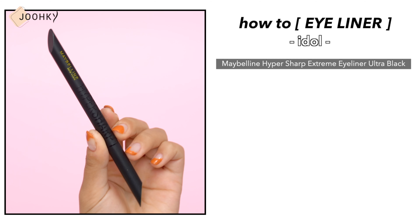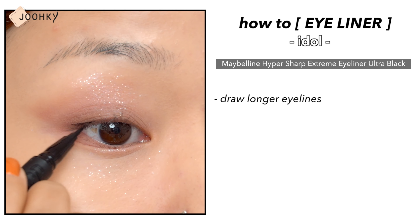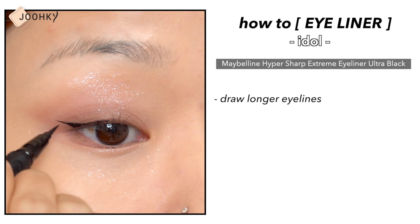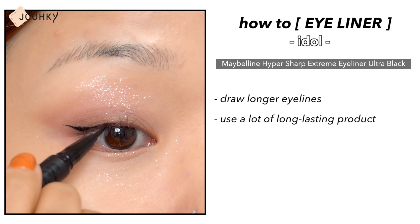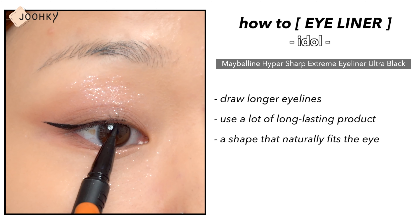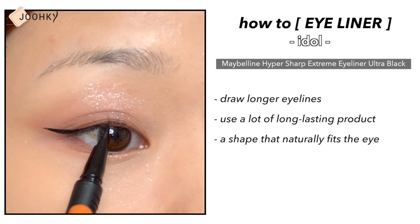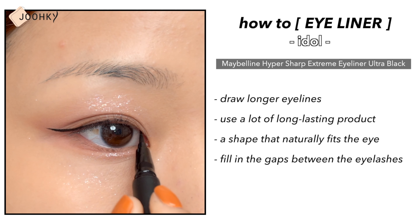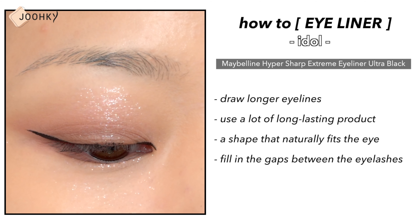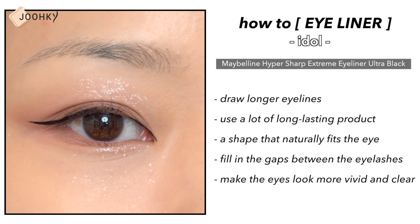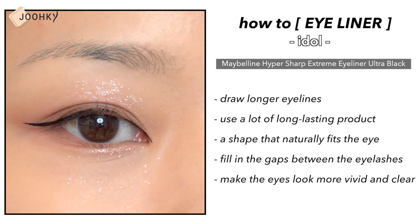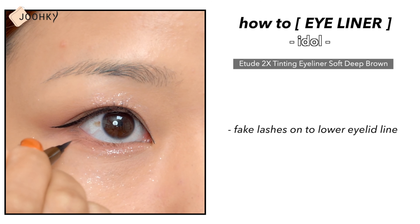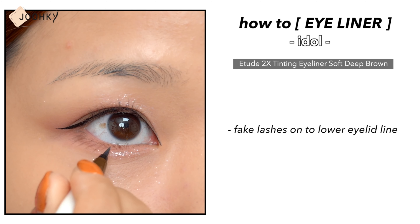Idols go for clearer eyeliners and draw longer eye lines than their actor counterparts. Durability is important for them, so they use a lot of long-lasting products. It's better to have a shape that naturally fits the eye rather than an eyeliner that goes up or down too much. Rather than drawing only on the corners of the eyes, fill in the gaps between the eyelashes to make the eyes look more vivid and clearer. I'll also draw fake lashes on the lower eyelid line with the Edits to Ex-Tinting Eyeliner in Soft Deep Brown.